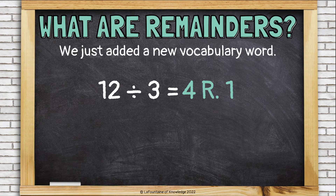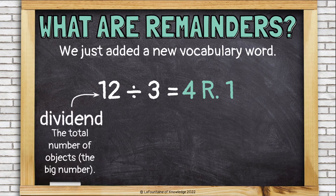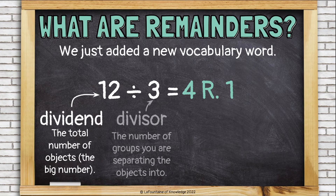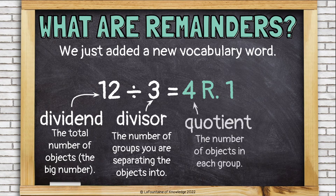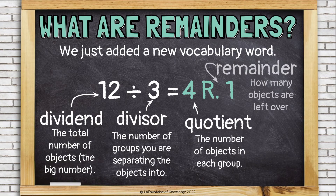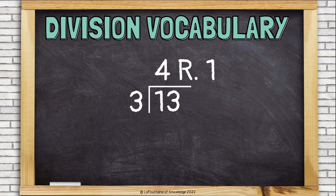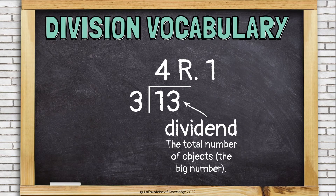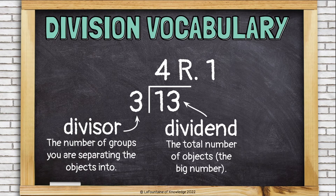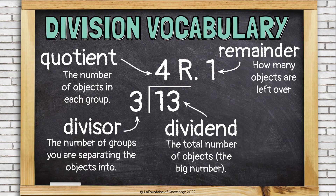We just added a new vocabulary word. We already knew dividend — the total number of objects, the big number — and divisor, the number of groups. And we knew quotient, which is the answer, the number of objects in each group. Now we have remainder, which is how many objects are left over. We can also write this using the bracket: the dividend, the divisor, the quotient, and the remainder.